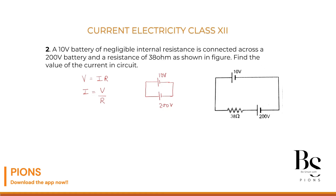Here we have only one single loop and the two batteries have their positive terminals connected to each other. So we subtract: 200 volt minus 10 volt. To get a positive result, we take 200 minus 10, because the higher battery drives the current, so by sign convention the effective voltage is 200 minus 10.